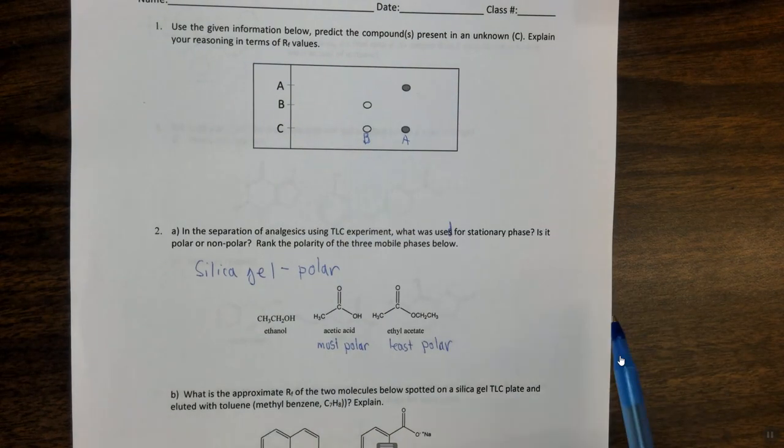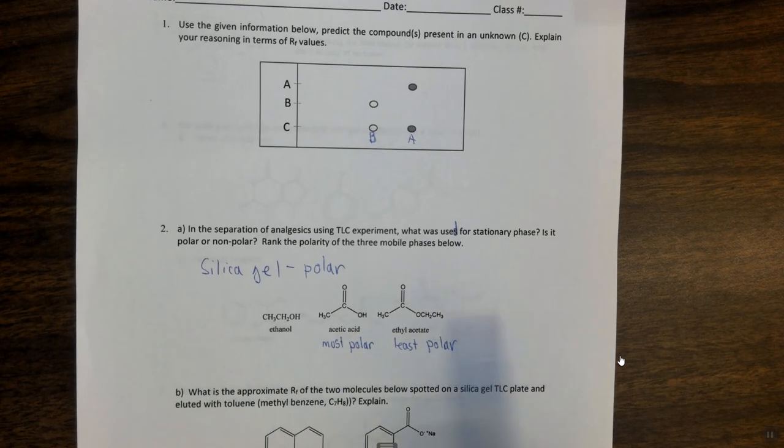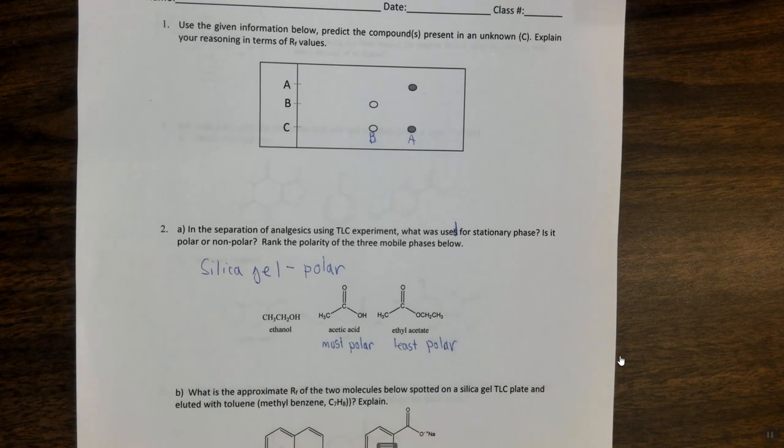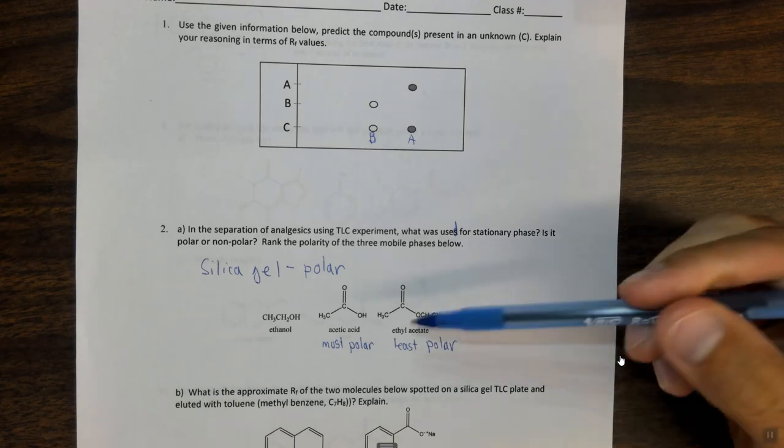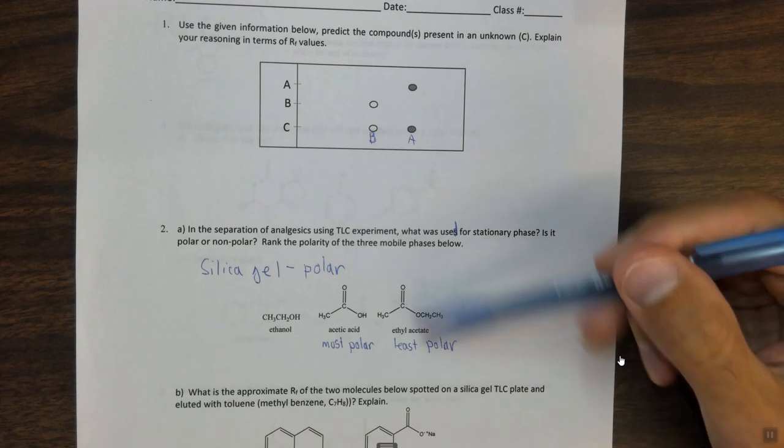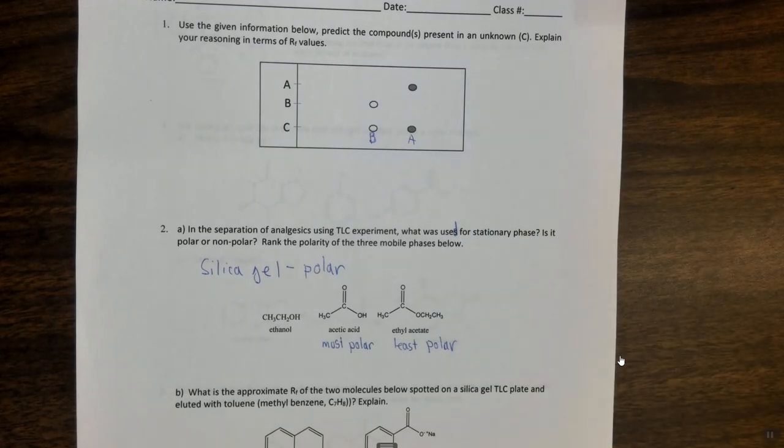So ranking them in terms of polarity, acetic acid is the most, followed by ethanol, followed by ethyl acetate, which is the least polar. And again here we're looking at the functional groups, and just as one other reminder, these are the exact molecules, the exact solvents, that you use as your mobile phases.